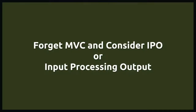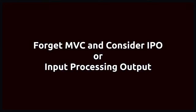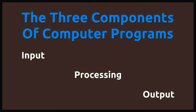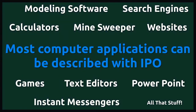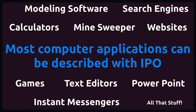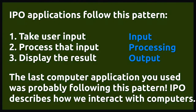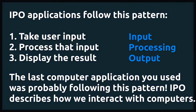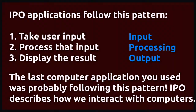I would like you to forget the acronym MVC and instead consider the acronym IPO, which stands for Input, Processing, and Output. IPO is a simple concept that outlines the three basic components of pretty much all common computer software. Whether you're using a text editor, presentation software, or playing a game on your phone, the program is doing three things over and over again: taking user input via some sort of controller, processing that input, and outputting a result to the screen. This is how computers take our raw input, process it, and give us something useful or entertaining in return.